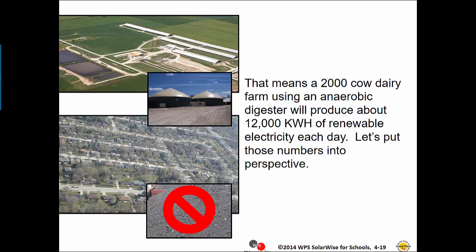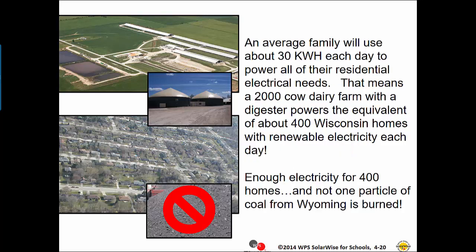Let's put those numbers into perspective. An average family will use about 30 kilowatt hours each day to power all of their residential electrical needs. That means a 2,000 cow dairy farm with a digester powers the equivalent of about 400 Wisconsin homes with renewable electricity each day — enough electricity for 400 homes, and not one particle of coal from Wyoming is burned.